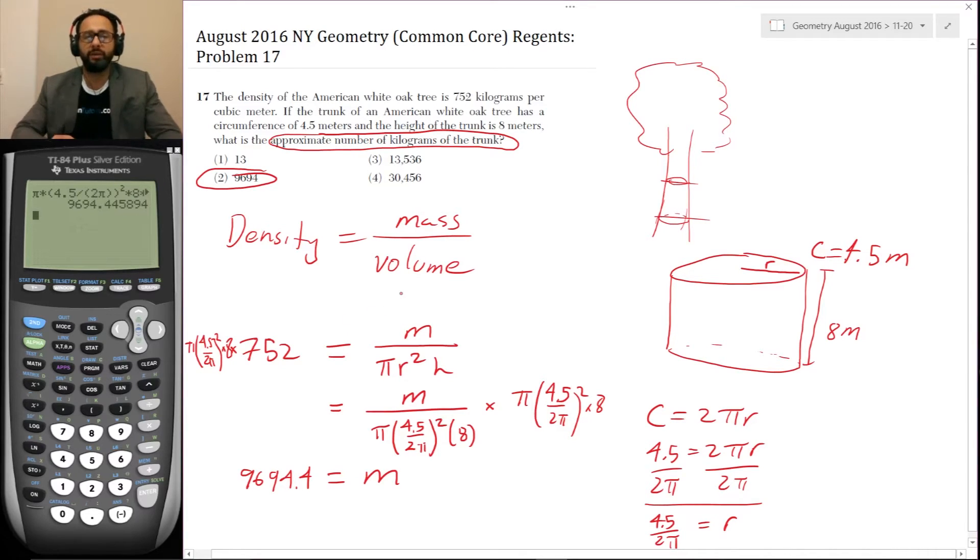Now if you wanted to know how to estimate this problem, a circumference of 4.5 meters is a circle of length 4.5 meters. Two pi r means that the circumference is just about one and a half times pi. So the diameter, that means it's just about a meter. Okay. So, and then it has a height, a meter, then the height is eight meters. So that's a heavy, heavy trunk.